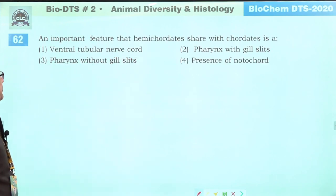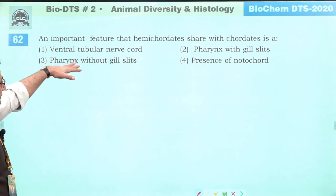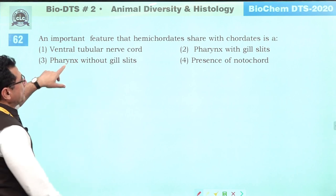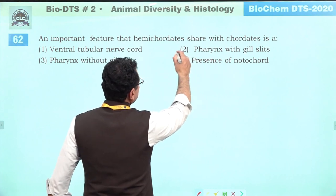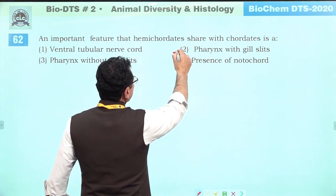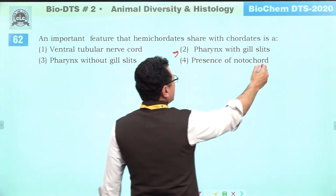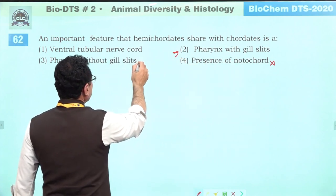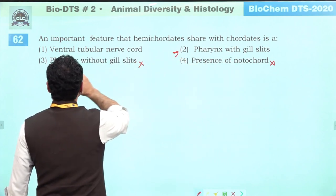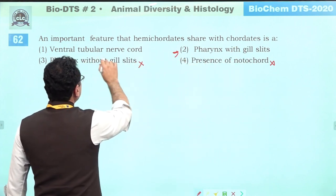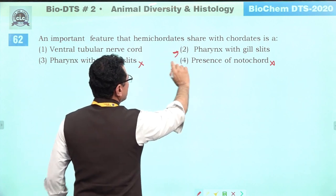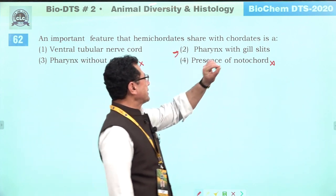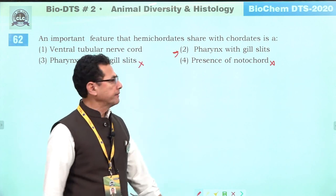An important feature that hemichordates share with chordates is pharynx with gill slits. Notochord is not in hemichordates. Ventral tubular nerve cord is not in chordates. So pharynx perforated with gill slits is the shared feature. Correct answer is one.